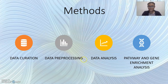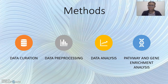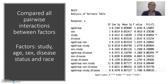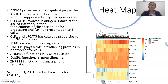Our next method is data analysis. To identify genetic variation across age, gender, ethnicity, and disease state, I performed a one-way ANOVA. I compared all pairwise interactions between factors such as study, age, sex, disease status, and race. This heat map shows expression of genes across data samples, and I will conduct downstream analyses to assess regulation and to see whether genes are up or down regulated according to disease status.